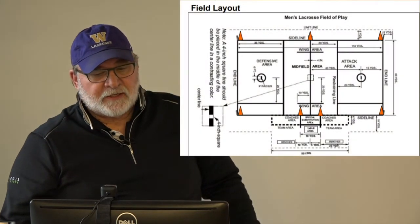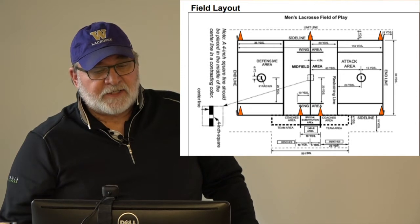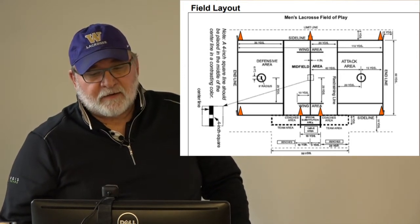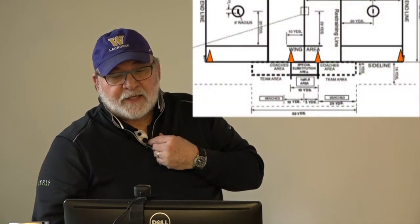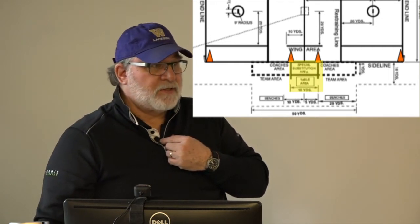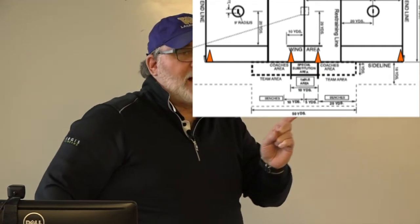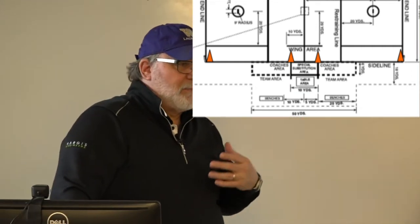The field is broken into three areas: a defensive area, the midfield area, and the attack area — swapped for the other team. Where we're mostly focused is the table area. We have the substitution area — called 'the box' — that all players must transfer through when substituting in and out. You'll also hear 'clear the box' when people are hanging out too long. There's the coaches area directly flanking the substitution box, and then the team area directly behind that.